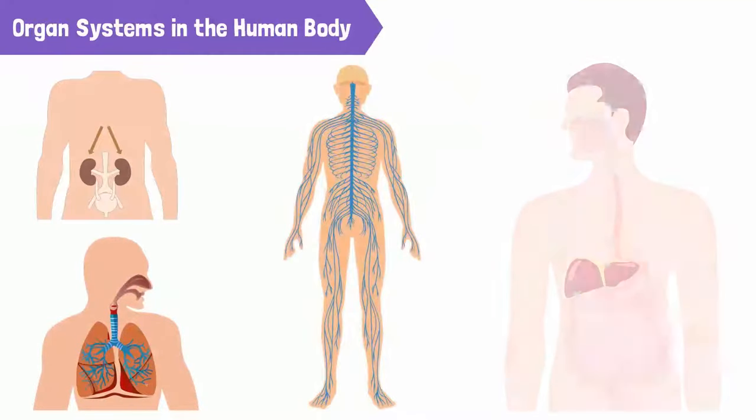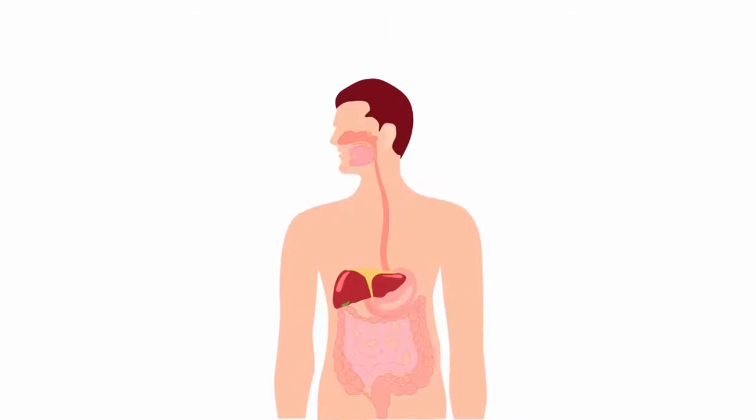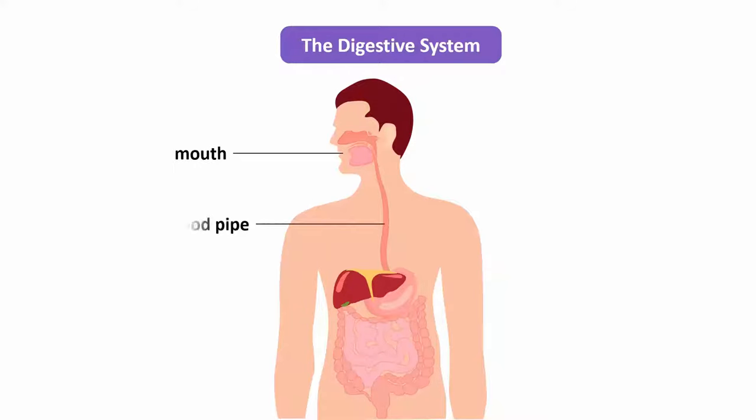There are many other organ systems in our body. The digestive system in our body helps us to break down food. It consists of the mouth, food pipe, stomach, liver, and intestines.